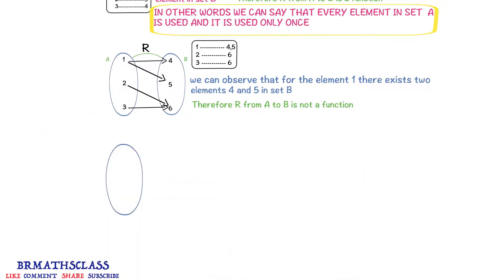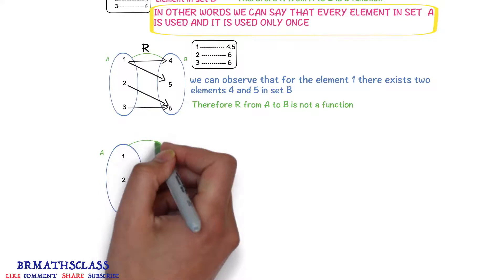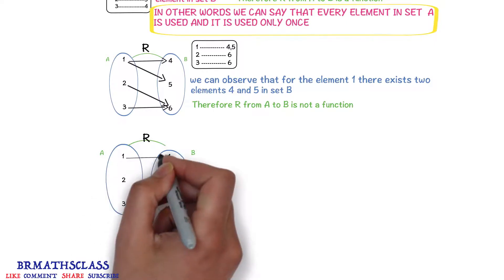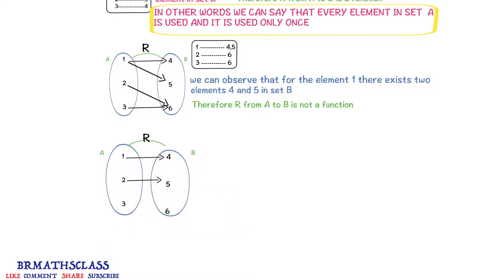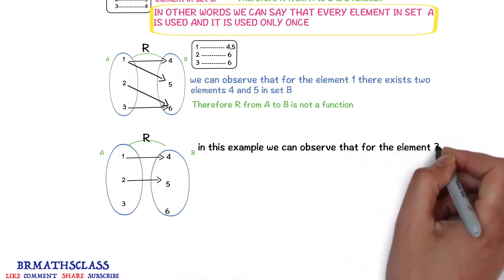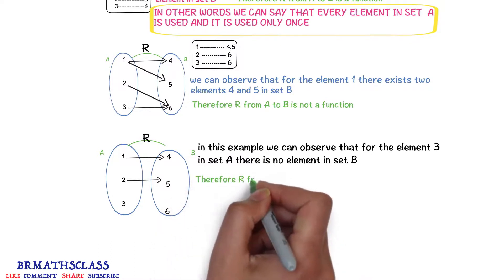I will explain the definition of function with one more example for more clarity. r is a relation from a to b as follows: 1 is related to 4, and 2 is related to 5. For the element 3, there is no element in set b. That means every element in set a is not used. Because of this reason, r is not a function from a to b.